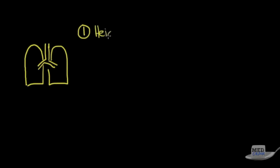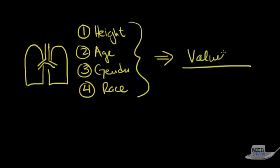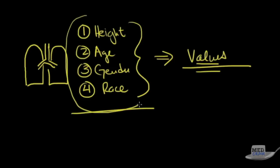The key takeaway from this lecture is that the lungs are an organ that can change in size, and different people have different normal values based on four criteria: height, age, gender, and race. Once you plug an individual's values into the computer, those output values are what you must base your abnormal determinations on. This is different from blood tests for the liver or an echocardiogram for the heart, where you don't need to account for these variables.